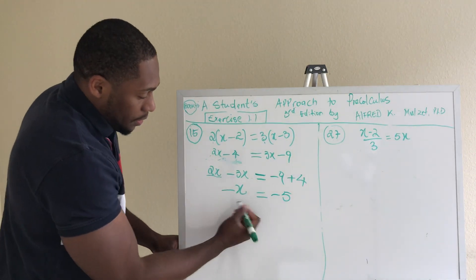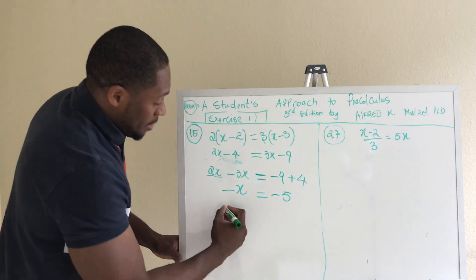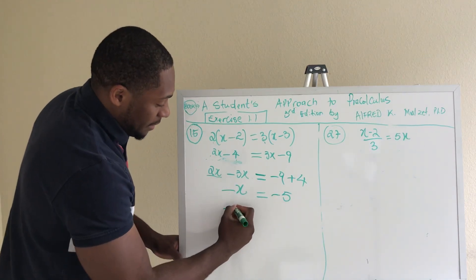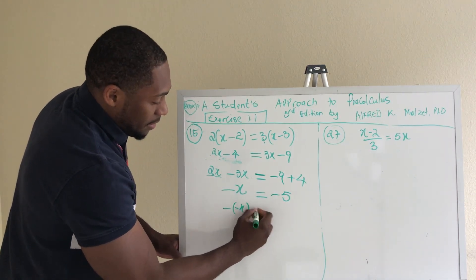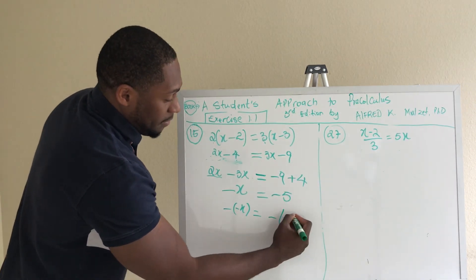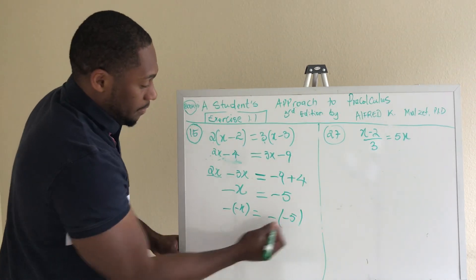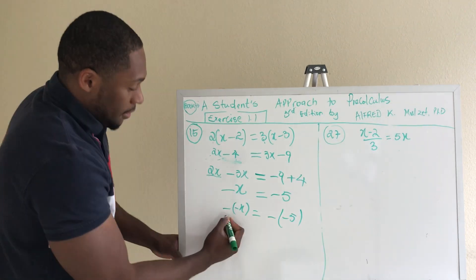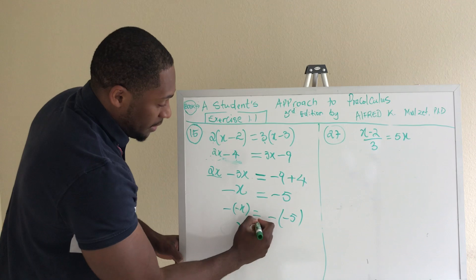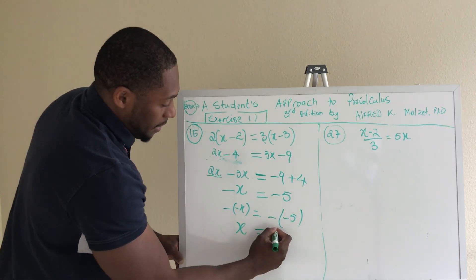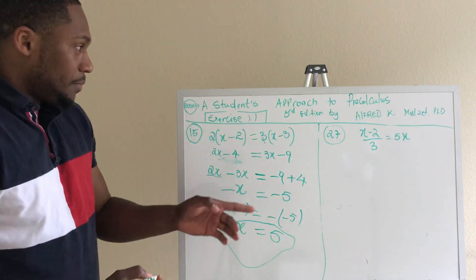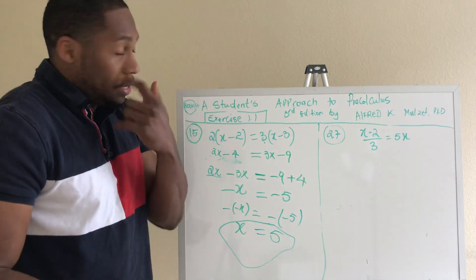So you multiply each side by negative one. Negative one times minus X is positive X, and negative one times minus five is positive five. So negative times negative, positive X. Negative times negative, positive five. Then you have X equals five. And we'll come back and solve for this one.